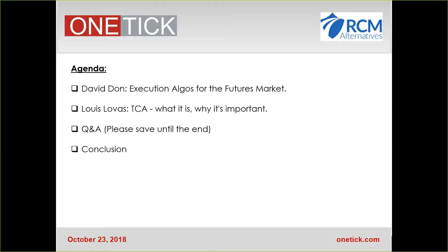Today we're going to discuss the techniques to optimize your trading in futures markets. Increasing competition, thinning margins, and new best practice regulations has heightened sensitivity to trading costs. The chief tool firms are using to meet these challenges has become automated execution algorithms. The goal of execution algorithms is to protect alpha by avoiding crossing the spread as much as possible while working to blend in with other participants' activity. Transaction cost analysis is intended to provide quantifiable objectives to measure execution performance against benchmarks.